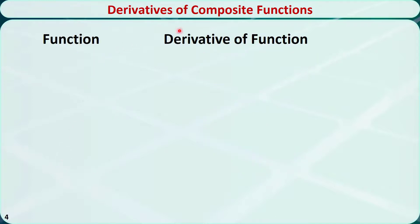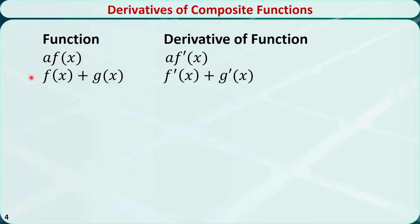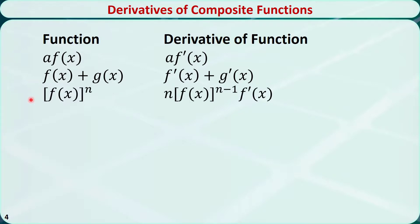Derivatives of some composite functions. The derivative of constant number a times f(x) with respect to x is a times the derivative of f(x). The derivative of f(x) plus g(x) is the derivative of f(x) plus the derivative of g(x). The derivative of f(x) to the power of n is n times f(x) to the power of n-1 times the derivative of f(x).